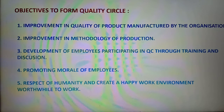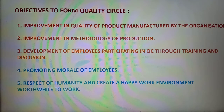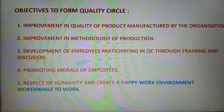Objectives to form Quality Circle: The first objective is improvement in quality of product manufactured by the organization. Second objective is improvement in methodology of production. Third objective is development of employees participating in quality circle through training and discussions. Fourth objective is promoting morale of employees. Fifth objective is to give respect to humanity and create a happy environment worthwhile to work in.